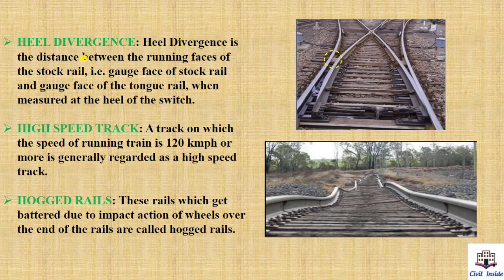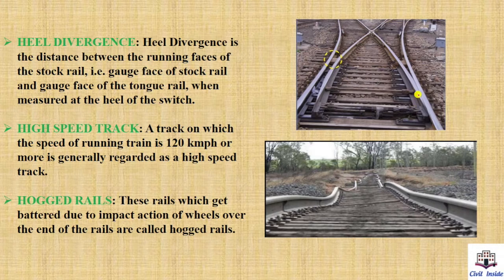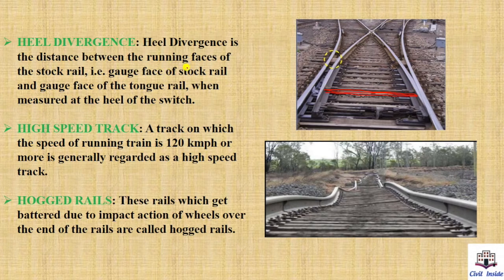Heel divergence is the distance between the running faces of the stock rail — that is, the gauge face of the stock rail and the gauge face of the tongue rail — when measured at the heel of the switch. This distance between the running faces of the stock rail and the gauge face of the tongue rail is heel divergence.